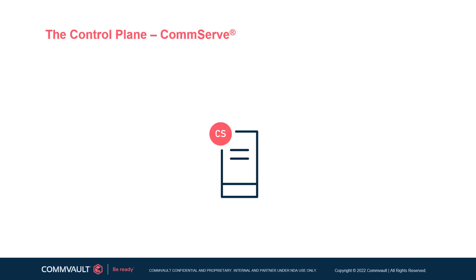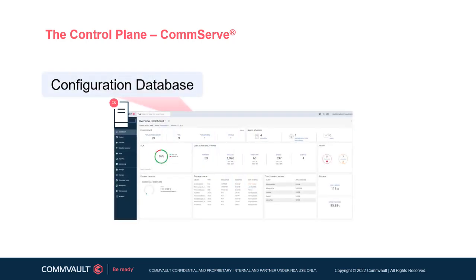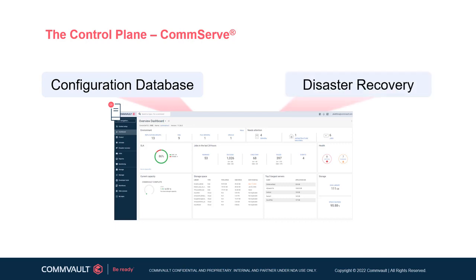The CommServe serves four primary functions. It holds the centralized configuration database and metadata database for the CommCell. The metadata database catalog includes metadata about the logical configuration and location of stored data. It also acts as a central point for disaster recovery, housing a Microsoft SQL database with configuration and media association — which in a disaster recovery scenario is the first item that needs to be recovered.